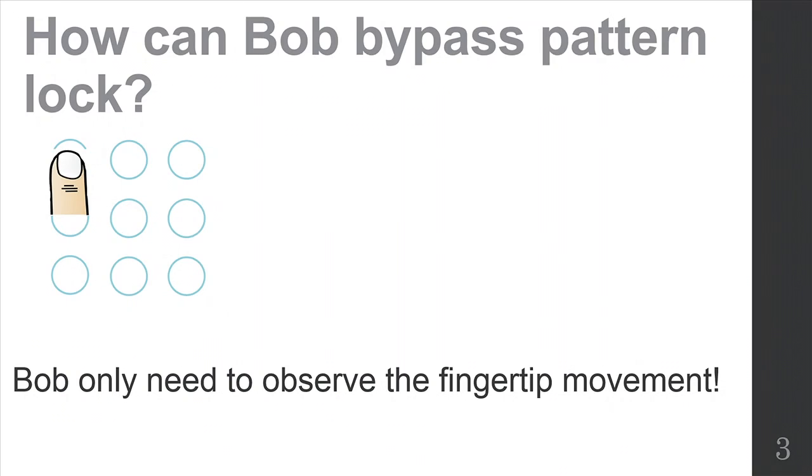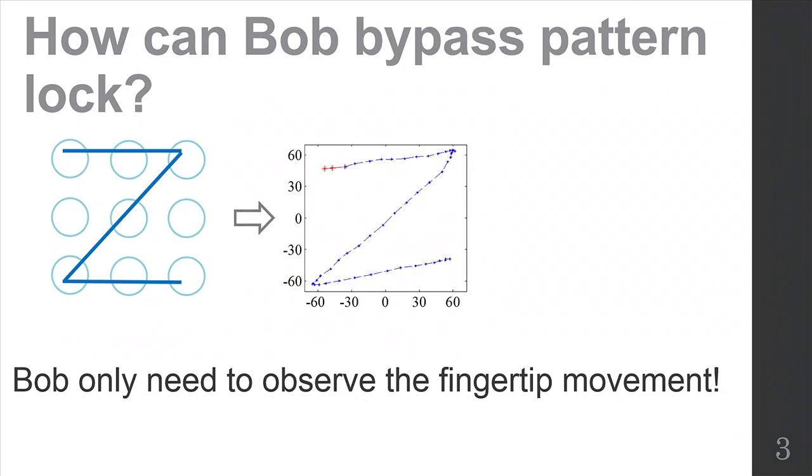So how can Bob quickly install malware on Alice's phone? Take this pattern for an example. Suppose this is Alice's phone, and Bob can get Alice's fingertip movement using tracking algorithm. And then, based on that, Bob can figure out Alice's Android pattern.